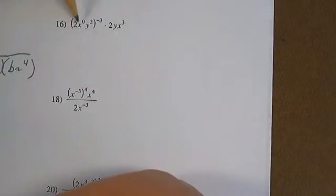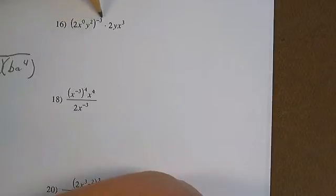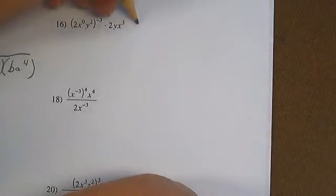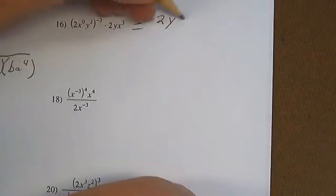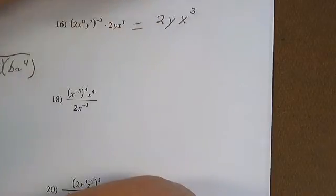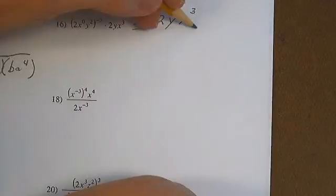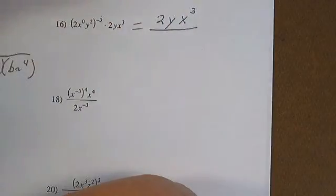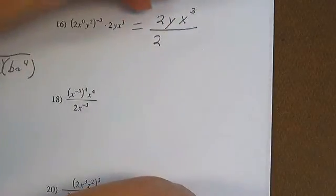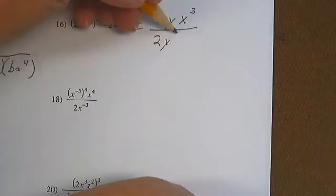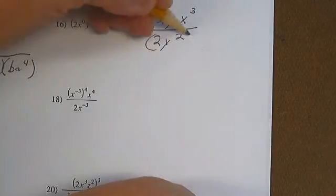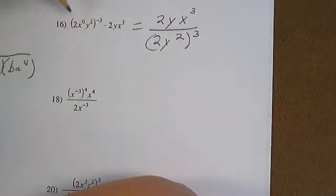We have 2 times x to the 0, y squared — the entire expression to the negative 3 — times 2y x cubed. So we have 2y x cubed over 2y squared cubed, because x to the 0 is 1.